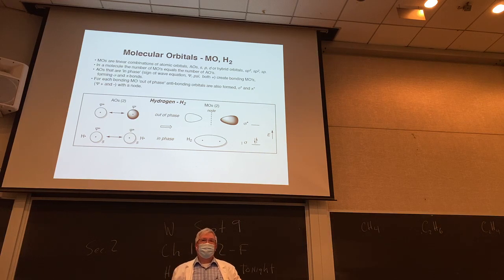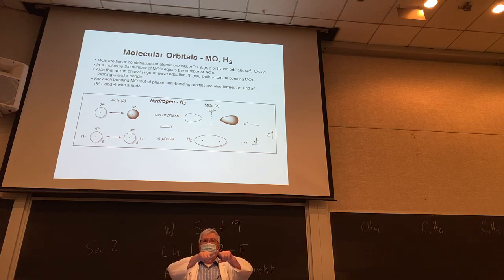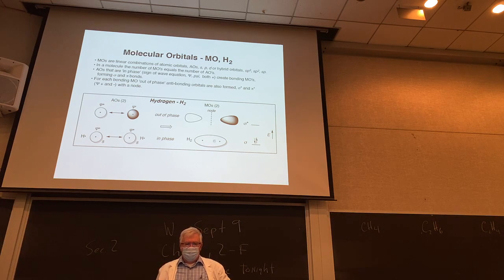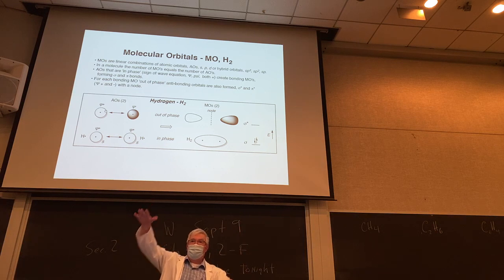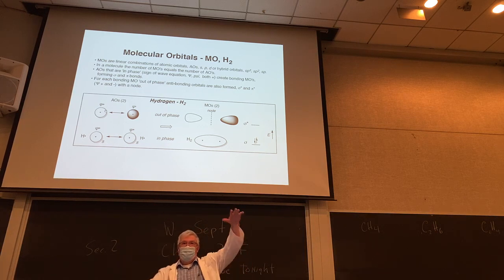Sigma means the electron density is localized on the axis between the two atoms bonded — we call that sigma symmetry. According to MO theory, we need to have the same number of molecular orbitals as the number of atomic orbitals we use. So if we have two atomic orbitals, we have to have two molecular orbitals: one where they're brought together in phase, and one where they're brought together out of phase — that's destructive overlap.